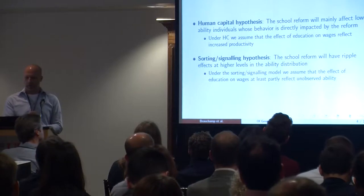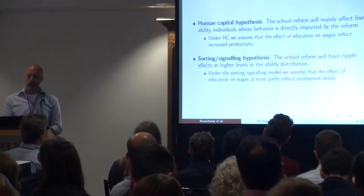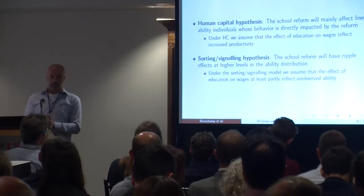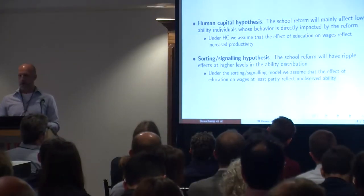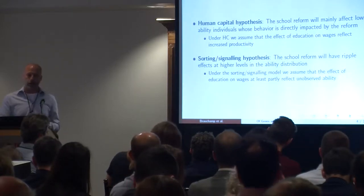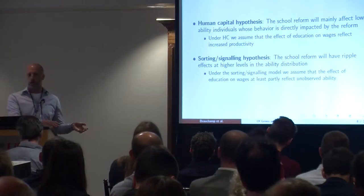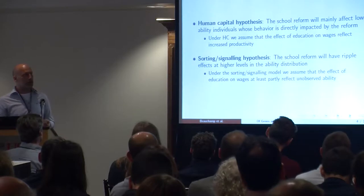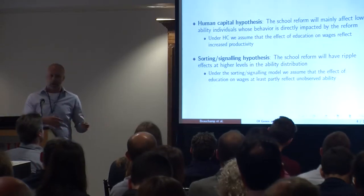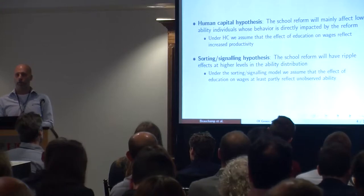The signaling or sorting hypothesis says we should expect the reform to also have ripple effects at higher levels of the ability distribution. The underlying assumption here is that the effect of education on wages at least partly reflects innate ability. Individuals use education to signal their unobservable ability, while employers use education to screen for workers. In a situation where a compulsory schooling reform has forced low-ability individuals to get more schooling, some higher-ability students will be incentivized to get even more schooling in order to distance themselves from lower-ability individuals — these are indirect, ripple effects of the reform.